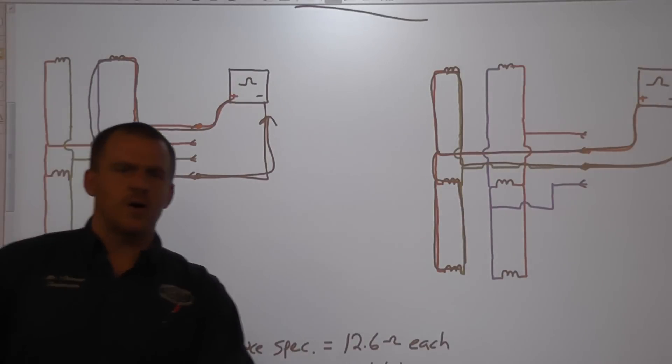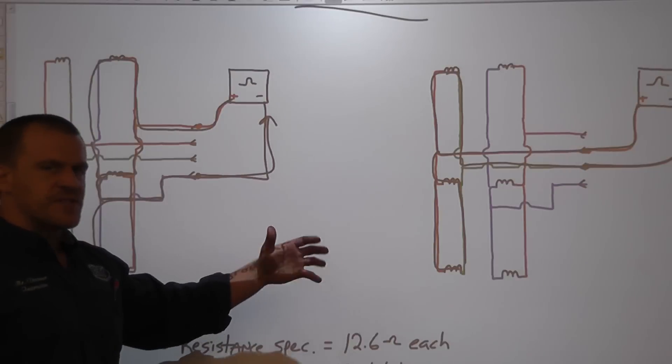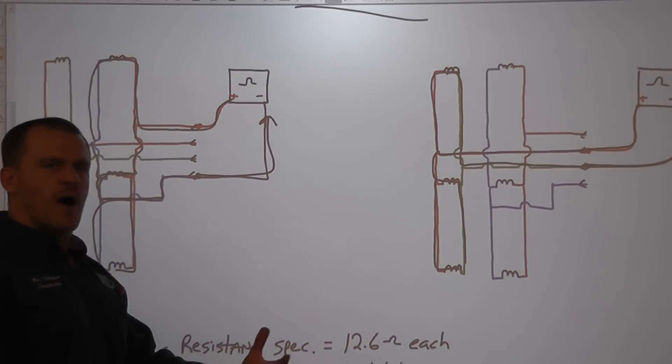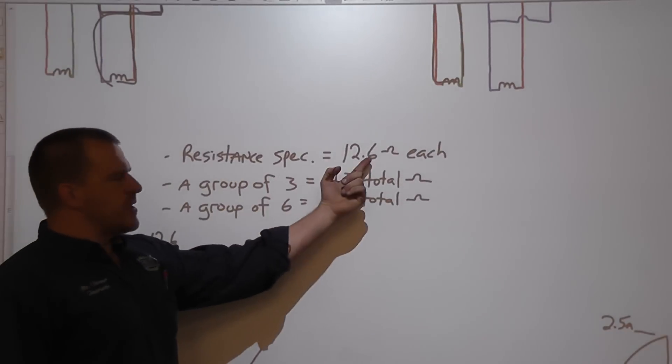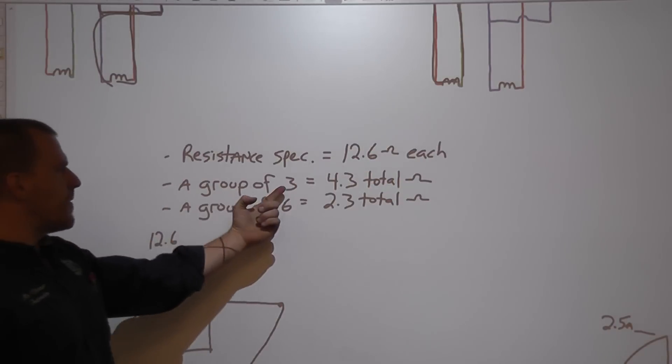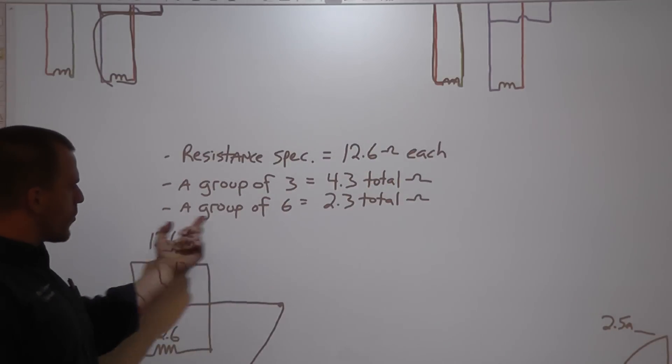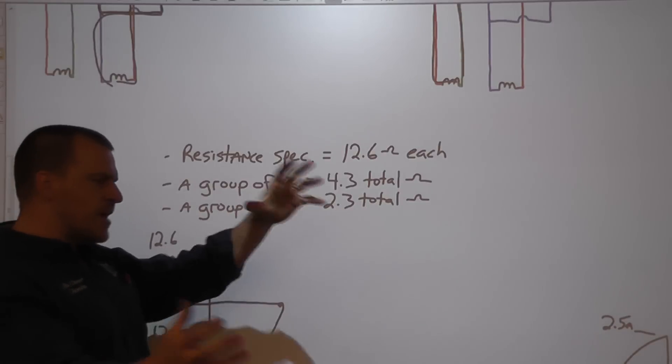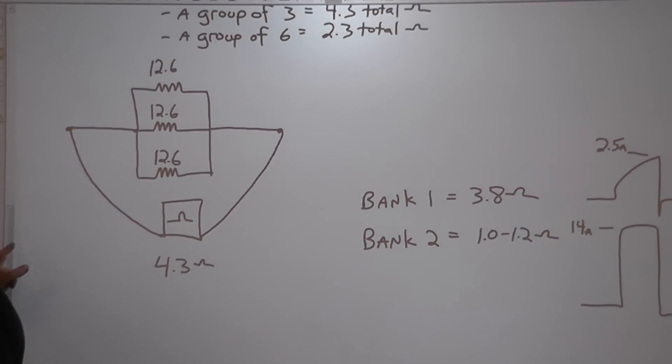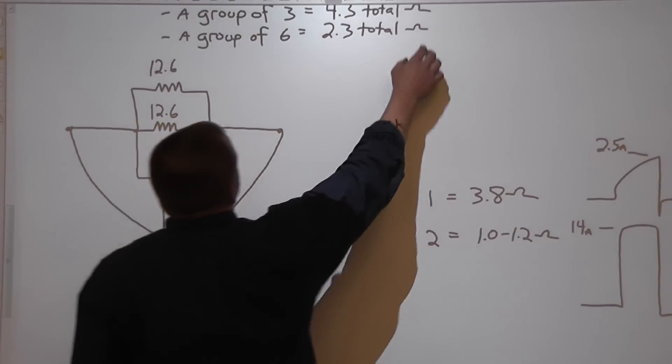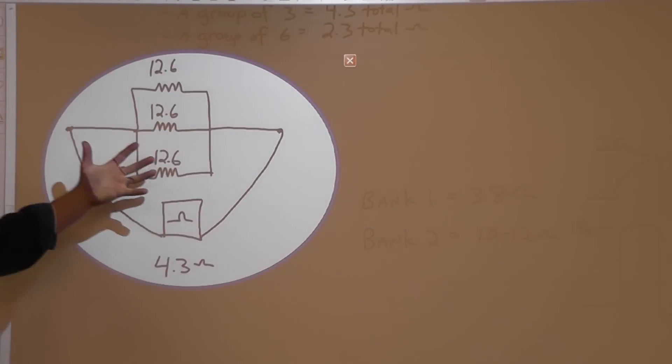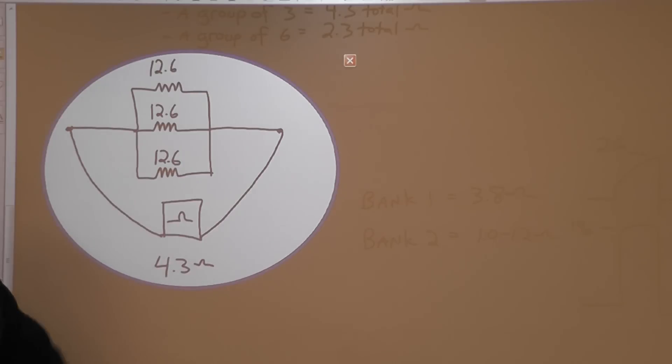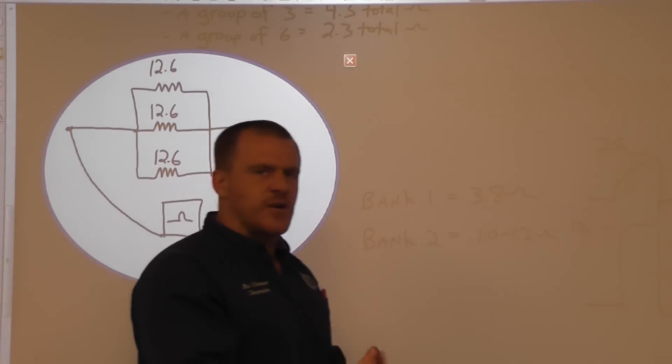Now there's something with parallel laws that you need to remember: when you have resistance that you add in parallel, you will drop total circuit resistance. And so I have some of these numbers down here. Resistance spec for each injector is 12.6. When you have a group of three, it would be 4.3. Or if you had a group of six, it would be 2.3. And that would be if you were measuring the whole group. So I'm showing a little illustration of that right here. We are looking at a group of three that would be reading 4.3 ohms apiece. That would be a group of 12.6 ohm injectors. And that's what we should have seen on both banks.